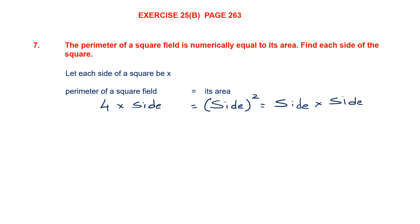We said let each side of the square be x. So we'll write this as 4 into x. And on the other side, side into side will be x into x. So now we have 4 into x is equal to x into x. Let's transpose x from the left hand side to the right hand side — so 4 will remain here and x will move to the right.